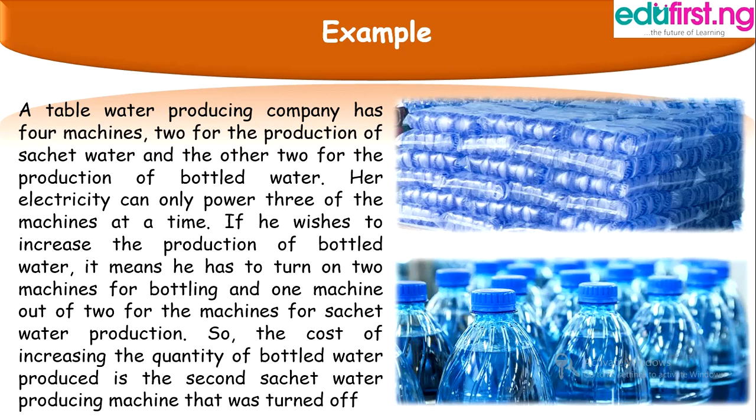For example, a table water producing company has four machines — two for the production of sachet water and the other two for the production of bottled water. Their electricity can only power three of the machines at a time. If the company wishes to increase the production of bottled water, it means the company has to turn on two machines for bottling and one machine out of the two machines for the production of sachet water. So the cost of increasing the quantity of bottled water produced is the second sachet water producing machine that was turned off.